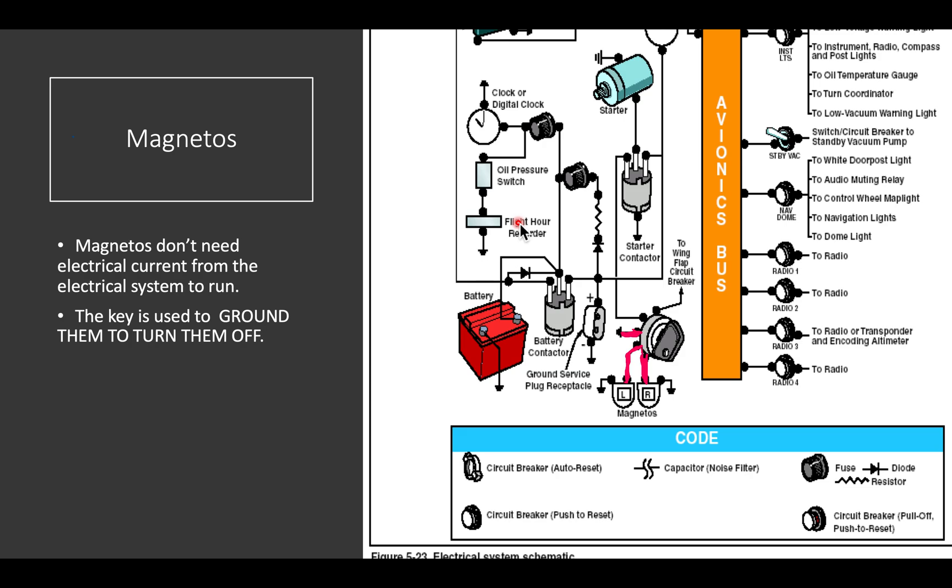While we're talking about the key, we probably ought to talk about the magnetos, since they're depicted on your electrical diagram. It's important for you to understand that the magnetos are not hooked to the electrical system in any way. They don't need electricity to run. They produce their own internally. The only reason we hook them up to the key is to turn them off. We ground the magnetos to turn them off.